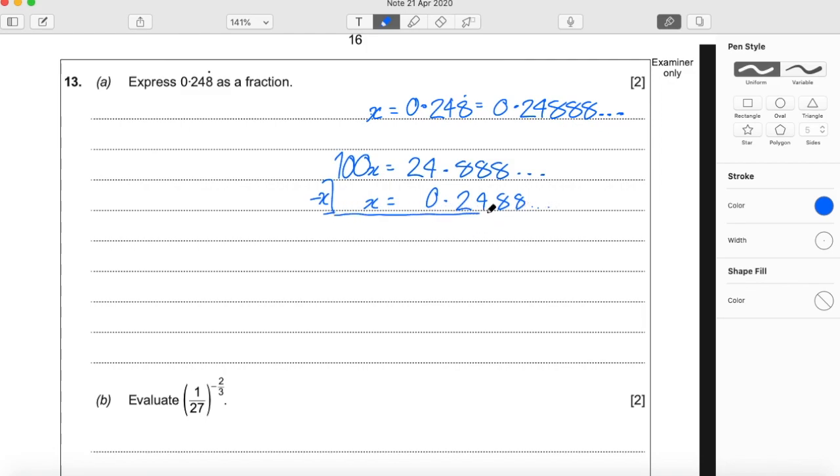Which will give us 99x on the left hand side. And it will give us 24.8 take away 2 is 6, 8 take away 4 is 4, and 8 take away 8 is 0. There would be an 8 here, take away that is 0. So what we're left with is actually just 24.64.